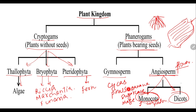Next is about the dicots. The leaves of dicots have reticulate type of venation, meaning the veins are branched. Dicots have a tap root system with a primary root, secondary root, tertiary root and quaternary root. These roots are present deep down into the soil — these are the characters present in dicots.